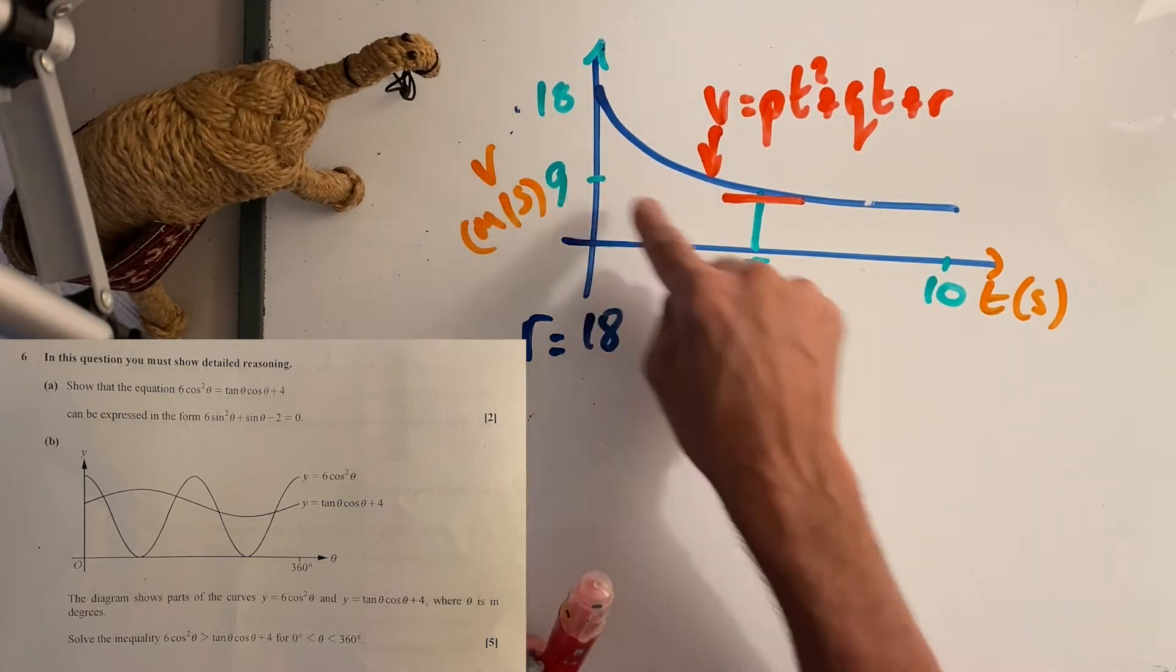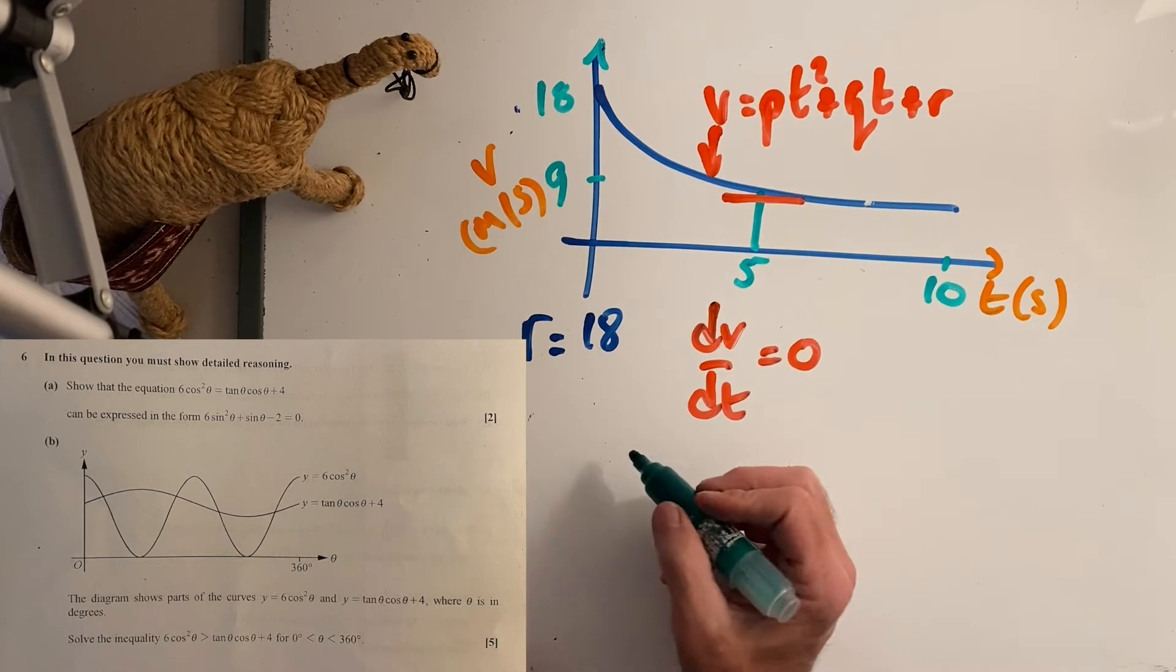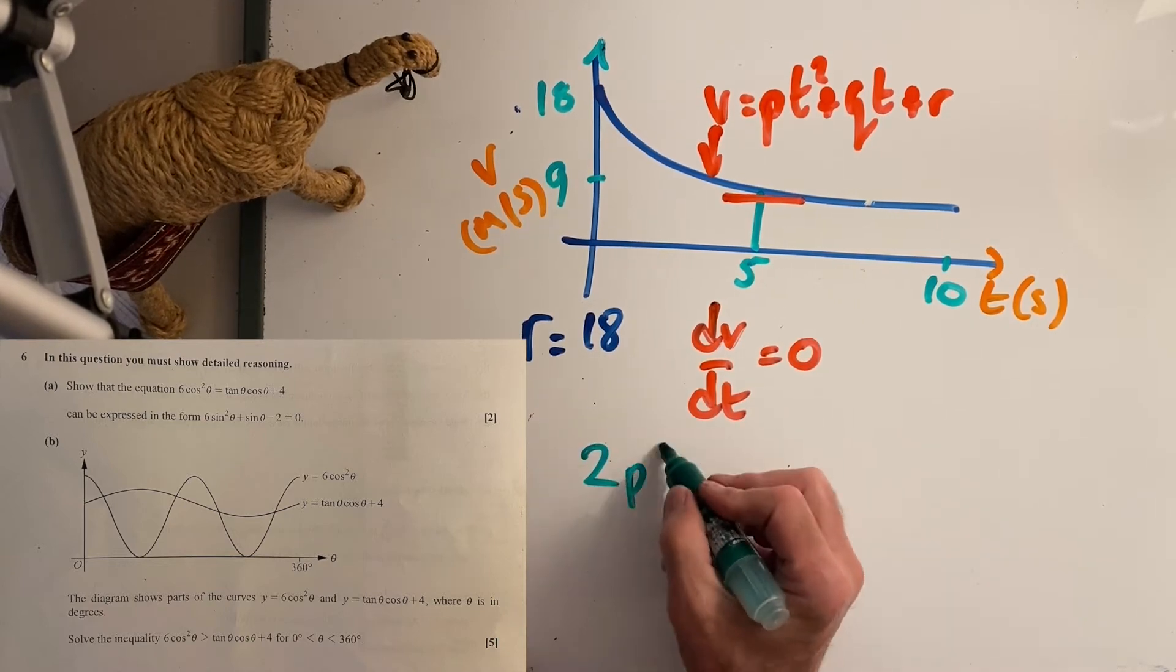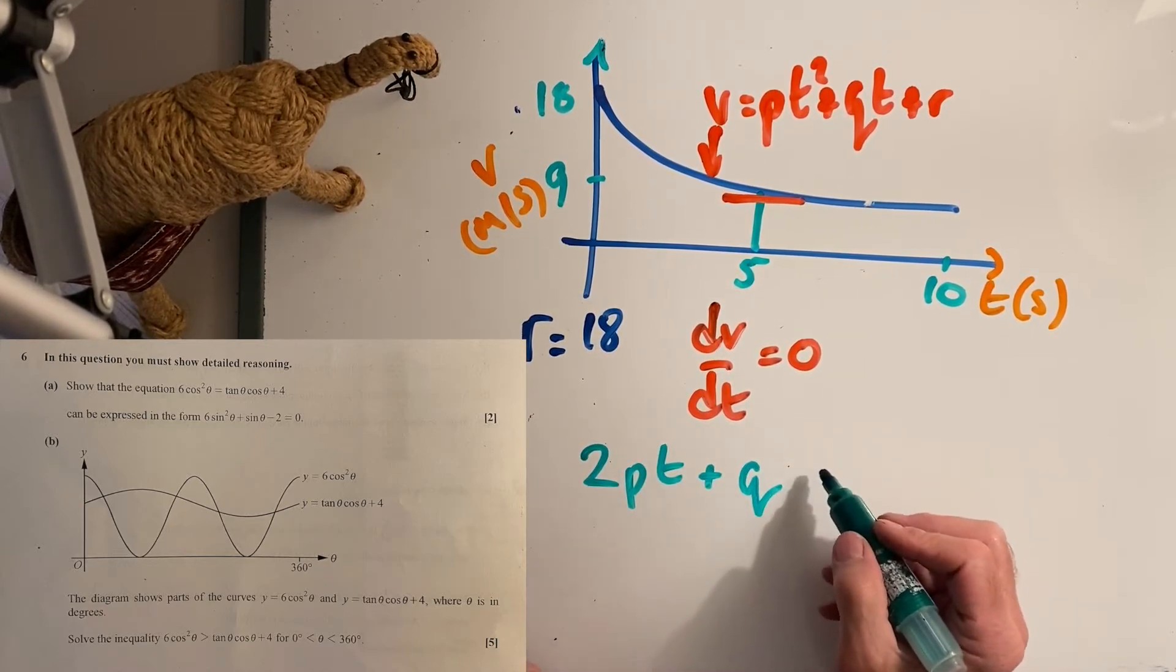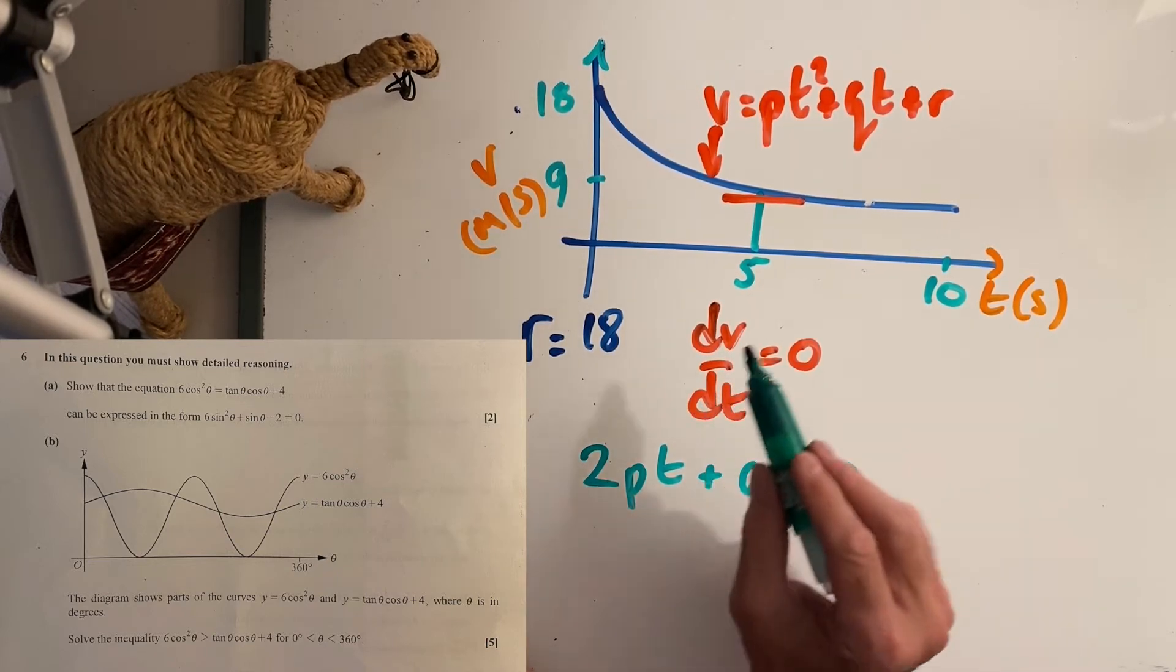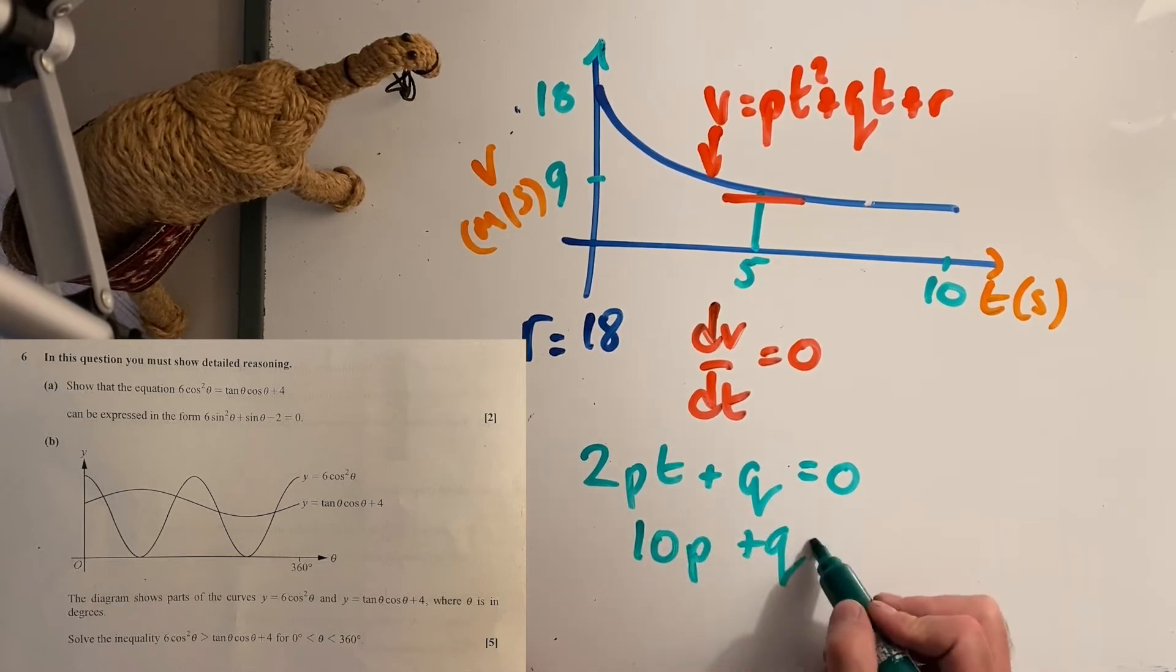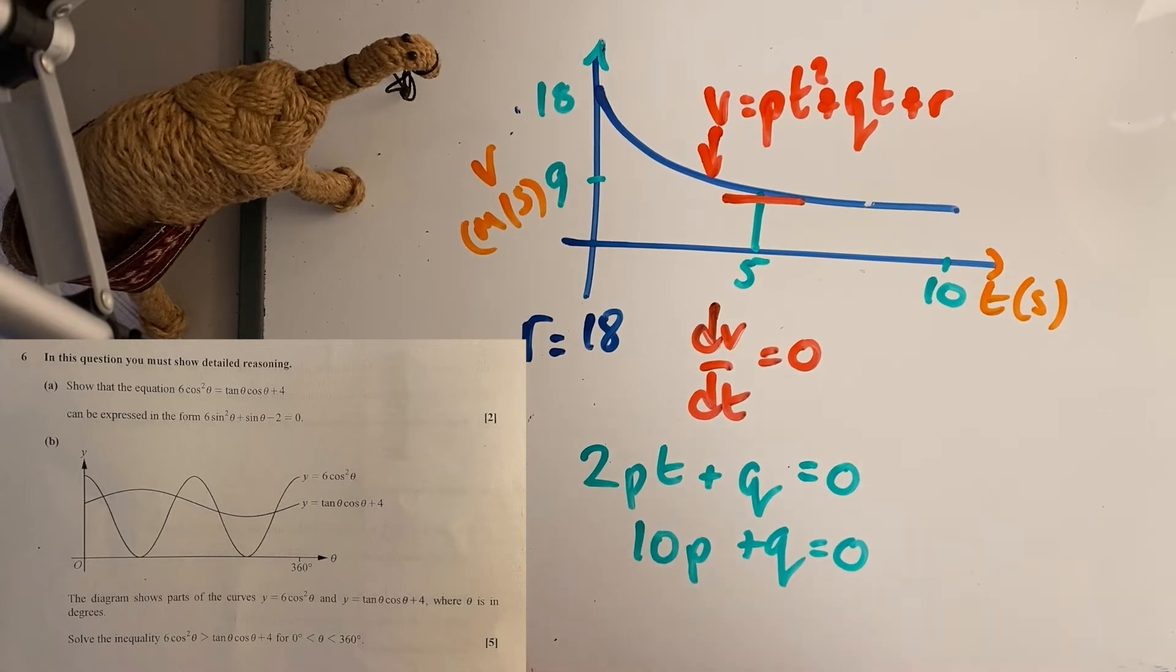I know where the coordinate point is as well, so I need to differentiate here. I get 2pt plus q, and I know that equals zero when t equals five. So I get 10p plus q equals zero. I've got a relationship there. I need to find another equation.